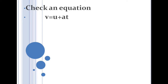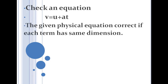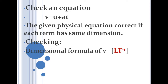Let's see the equation v = u + at, a very familiar equation. Here v is the final velocity, u is the initial velocity, and the third term a×t is acceleration times time. We can say the given physical equation is dimensionally correct if each of these three terms has the same dimension, according to the principle of homogeneity of dimensions.